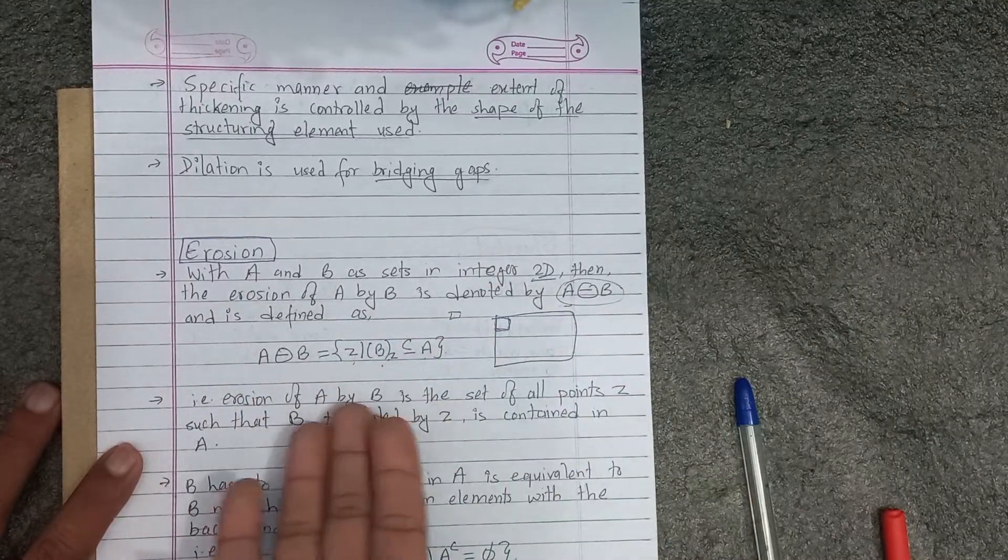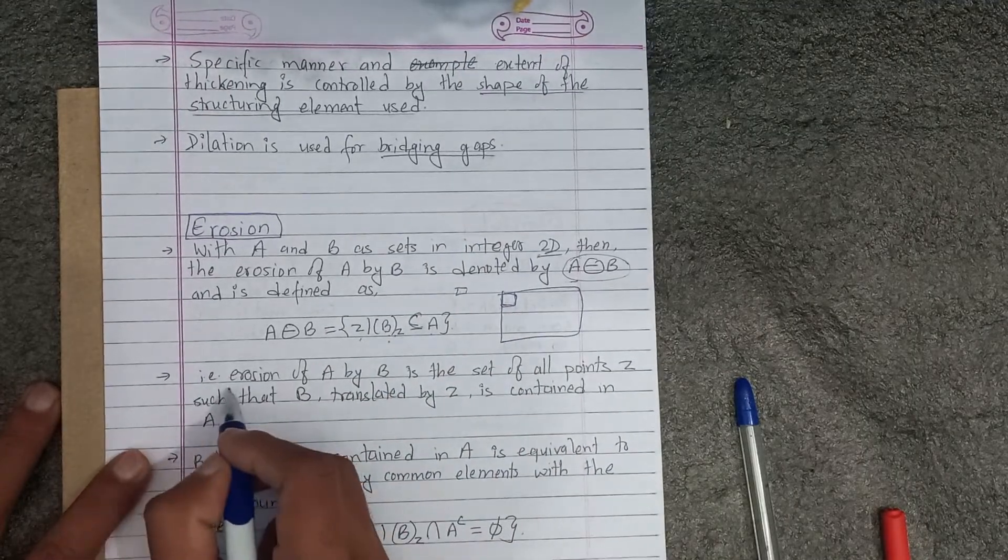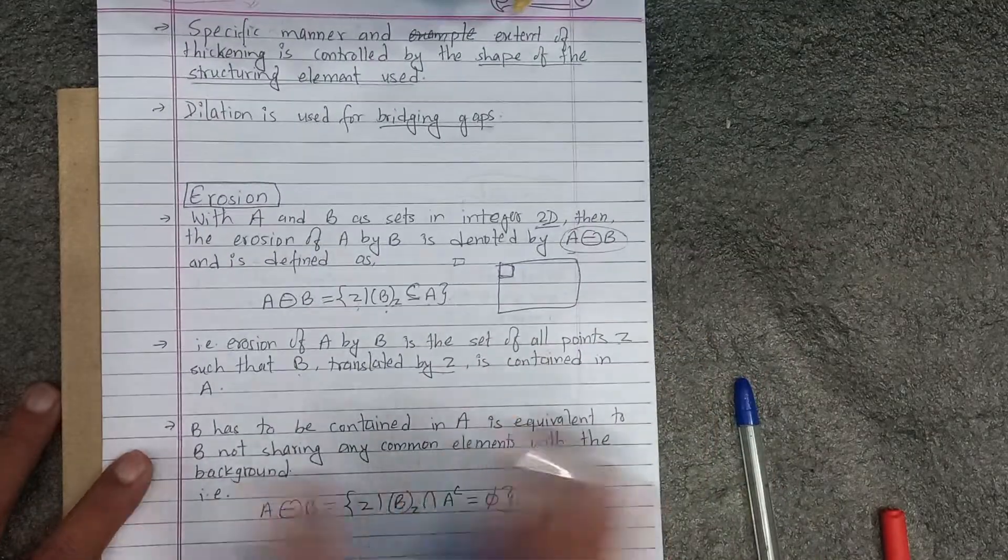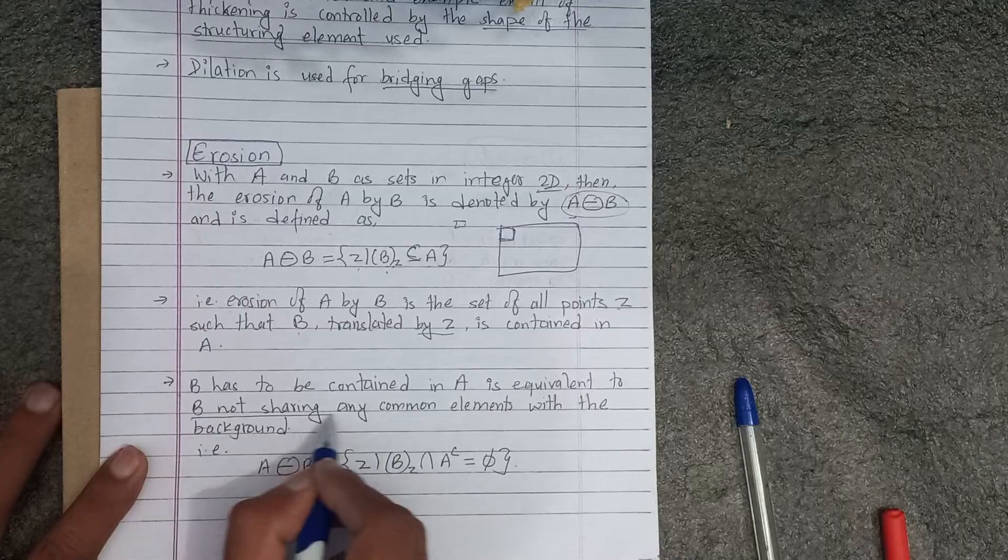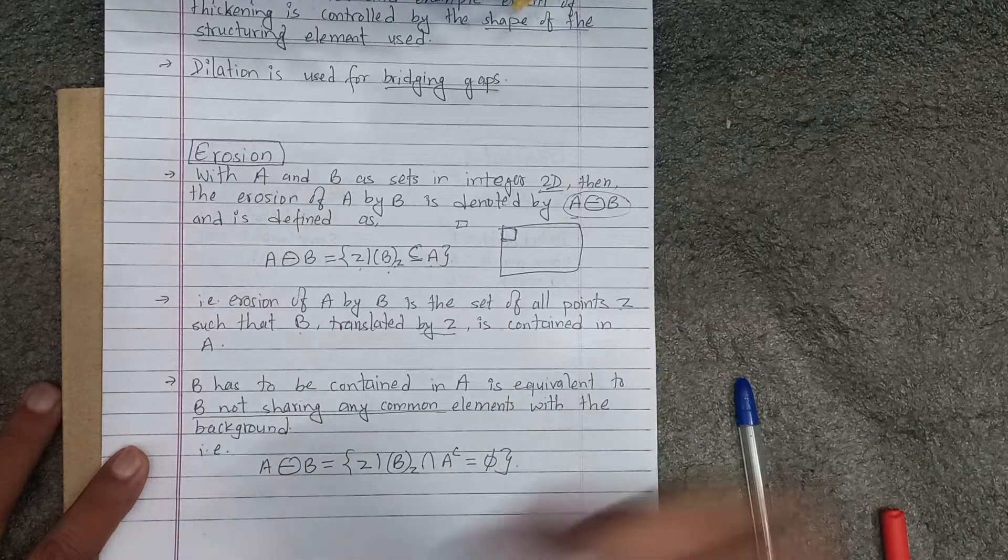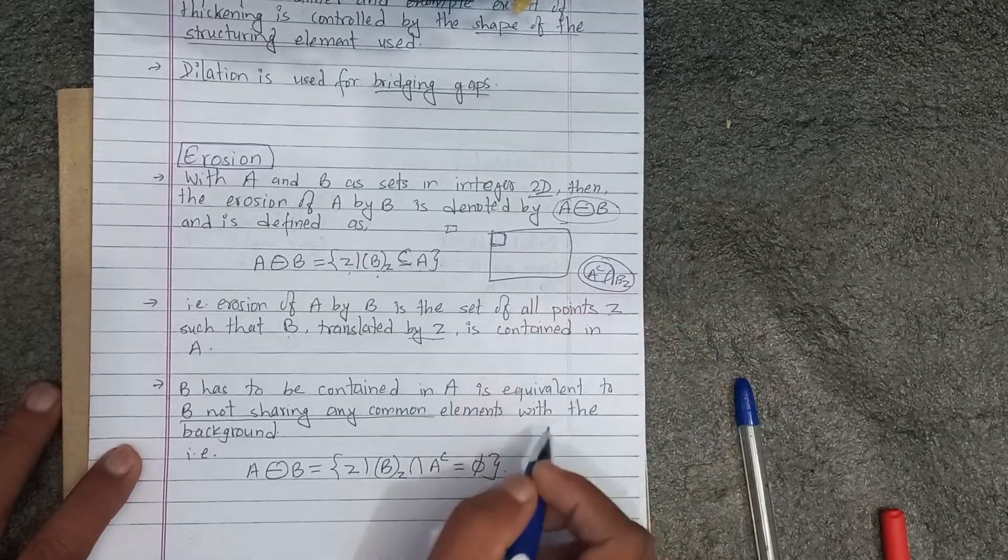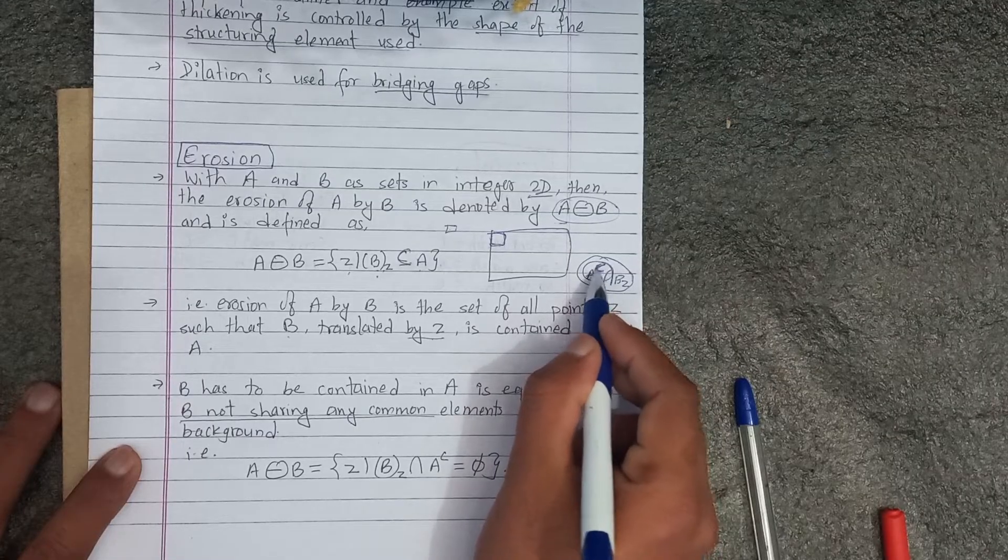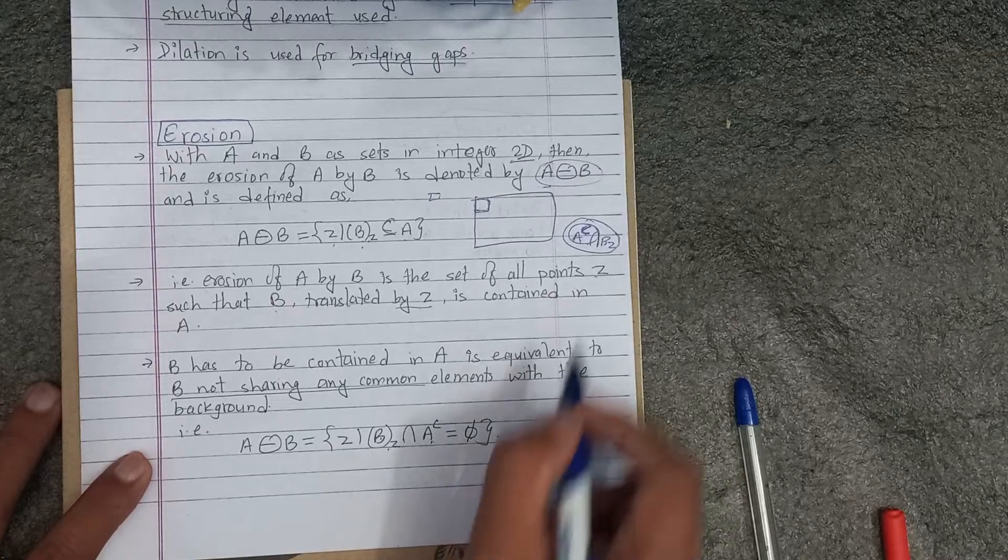What is the erosion of A by B? The erosion of elements of A is the set of all points Z such that B translated by Z is contained in A. A must contain B. B has to be contained in A is equivalent to B not sharing any common elements with the background, the complement of A. Translated B intersection with complement A should be null set. Okay?